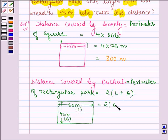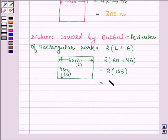So, we have 2 times of 60 plus 45, which is equal to 2 into 105 meters, which is equal to 210 meters.